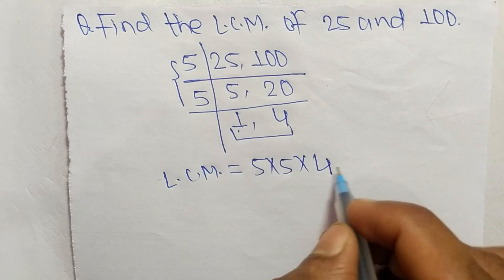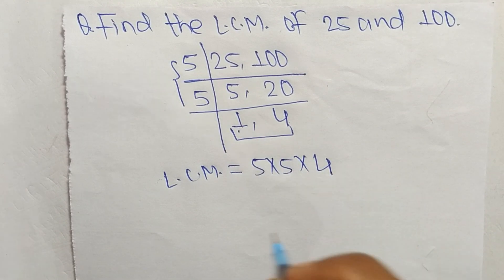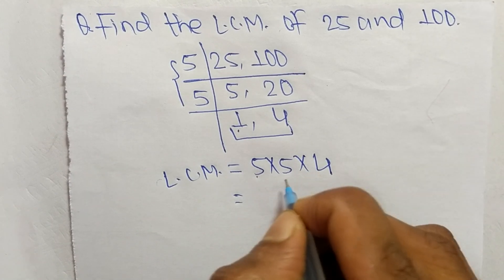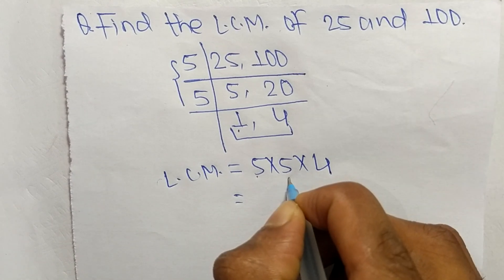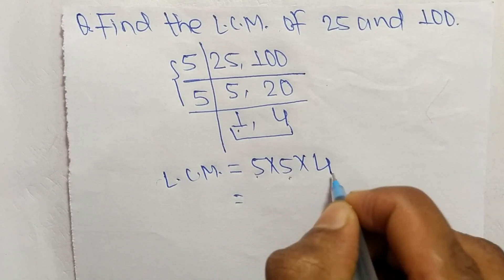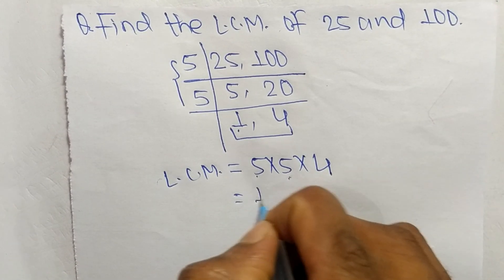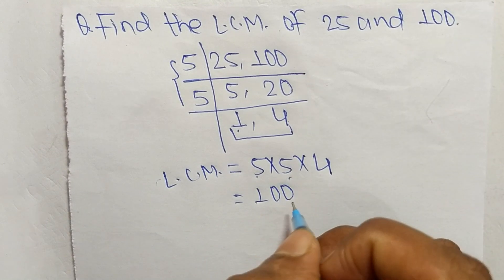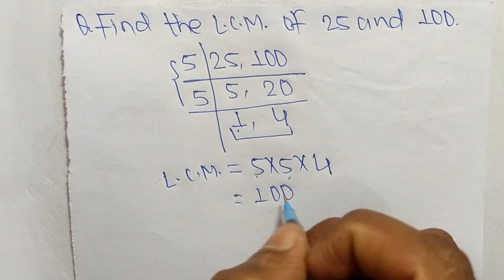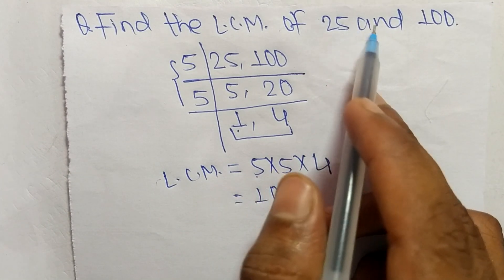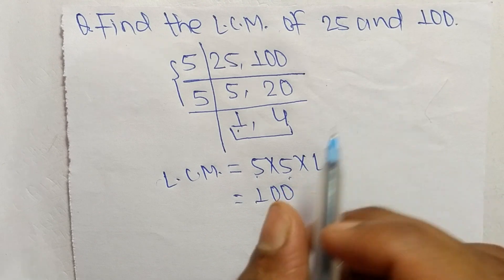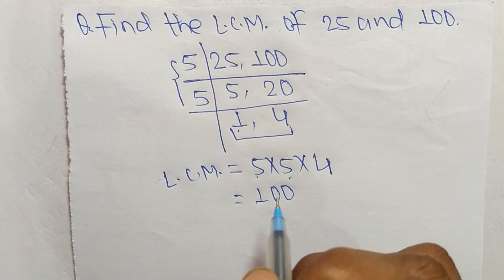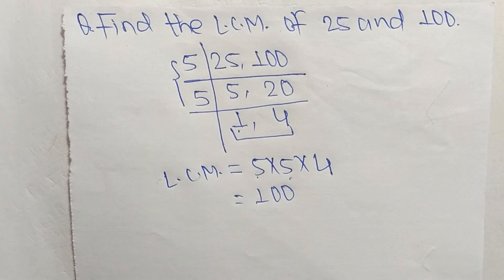So 5 times 5 equals 25, and 25 times 4 equals 100. Therefore, 100 is the LCM of 25 and 100. That's all for today — thanks for watching!